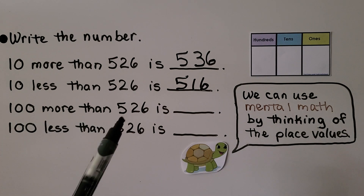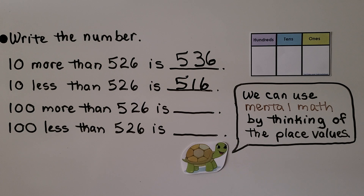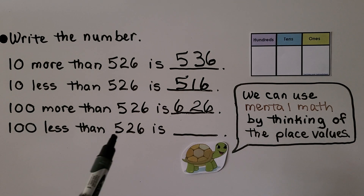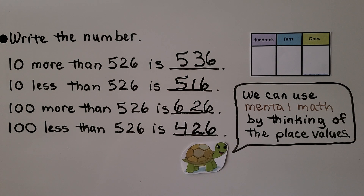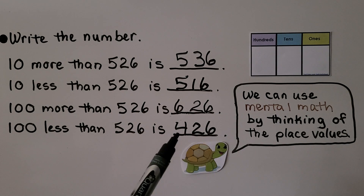100 more than 526 — do you know? We would give it one more 100. It would be 626. 100 less than 526 — do you know? If you said 426, you're right. We can use mental math, think of the place values, and add one to that place value or take one away.